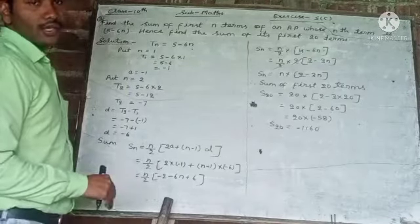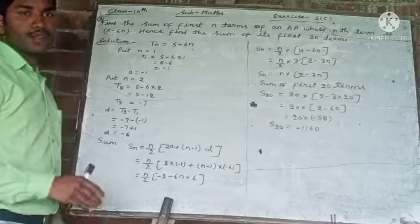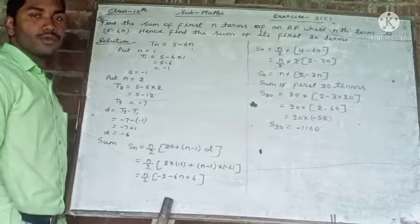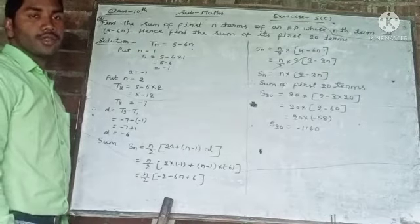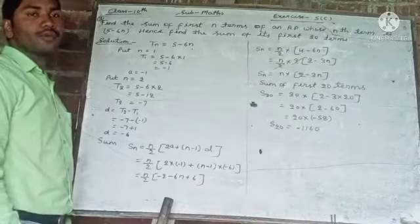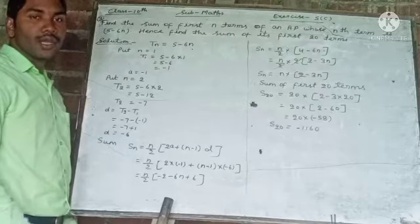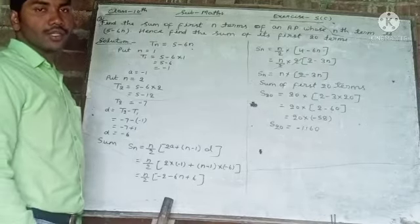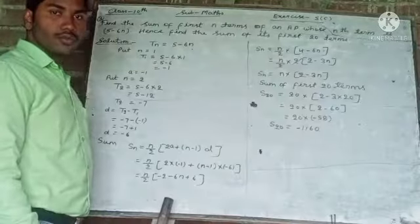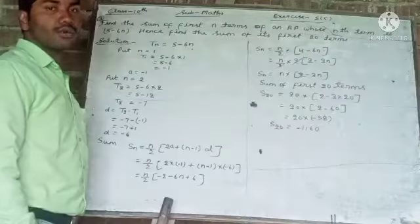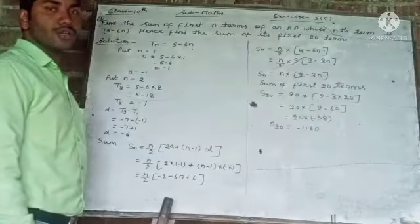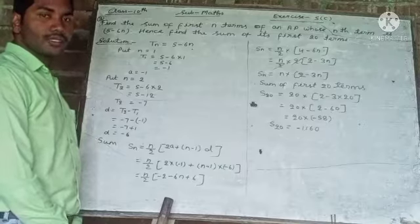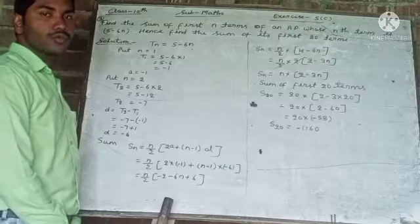So, this way, if the question is given in the form of the nth term, first of all you will have to find the value of the first term and common difference, and after that you can find out the sum of first n terms of the AP. So for today, that's all. Thank you.